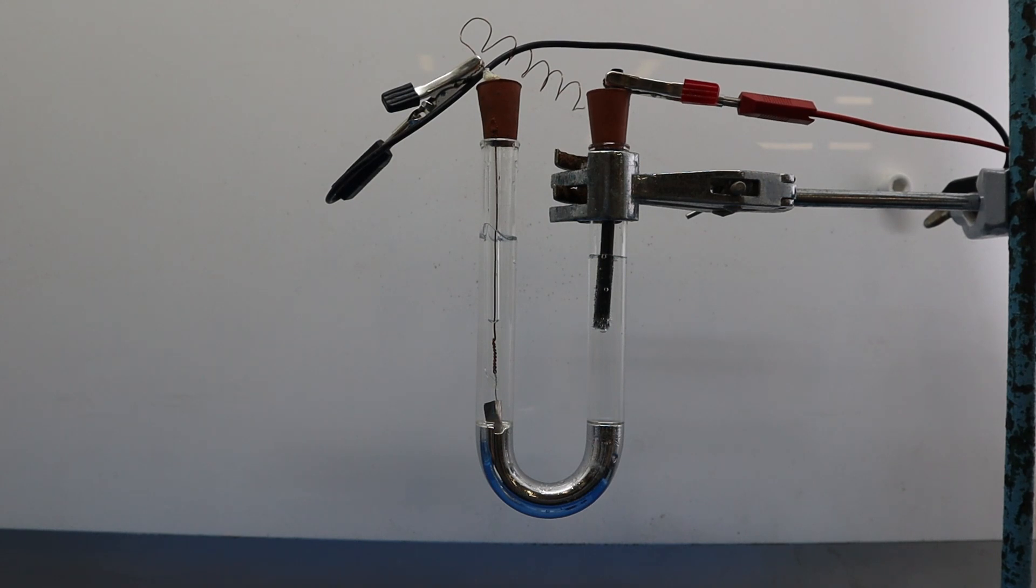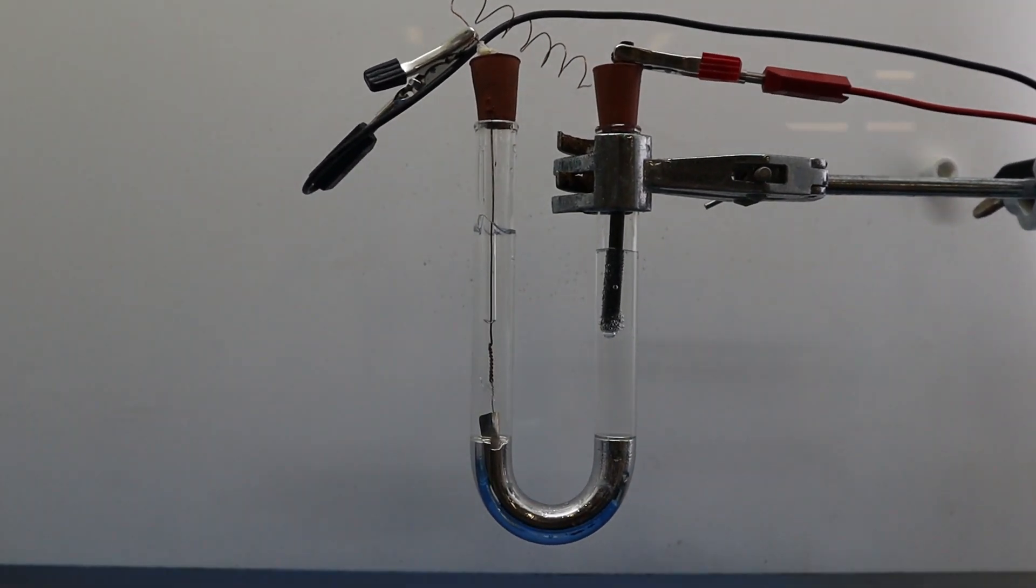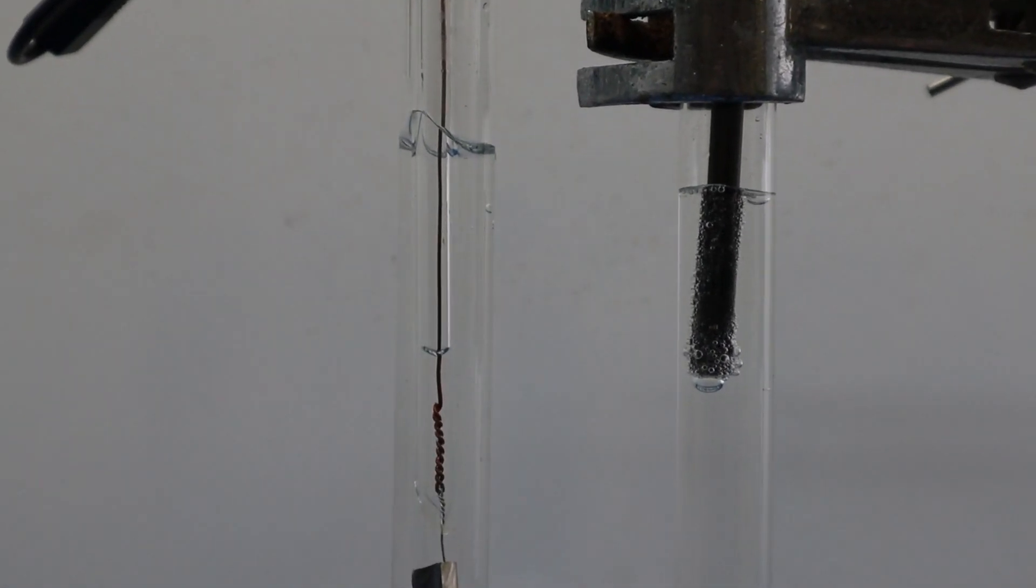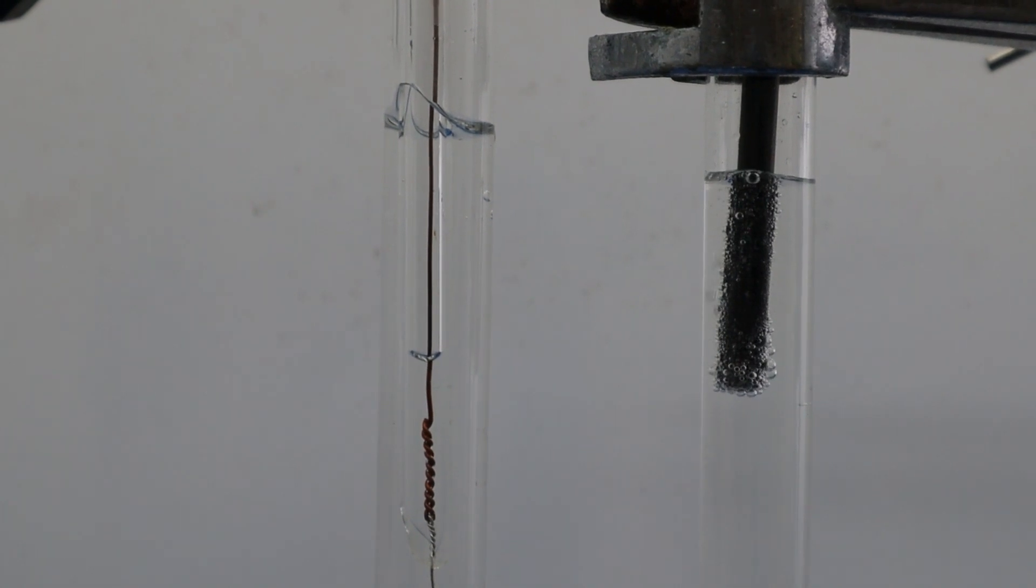Now the power pack is turned on. Now you can see clearly, gas bubbles are formed on the surface of graphite electrode. It is expected to be chlorine gas.